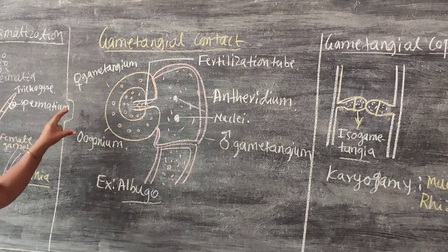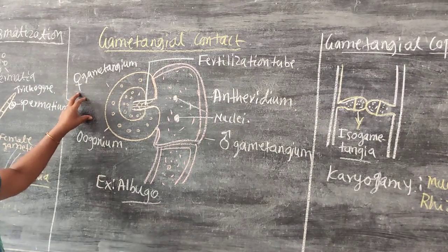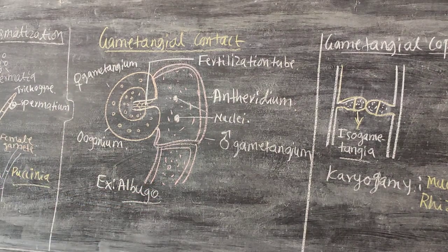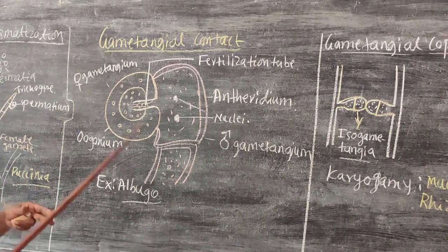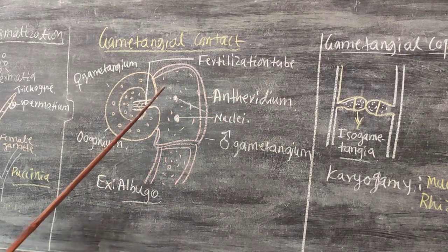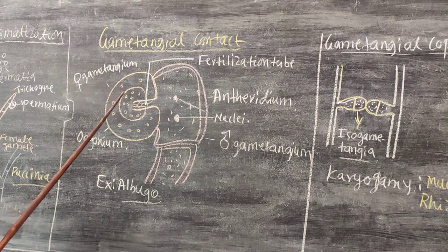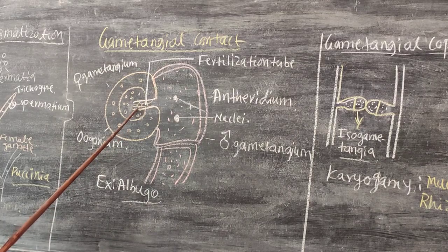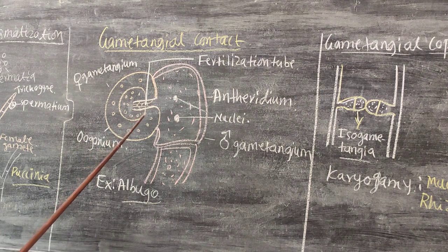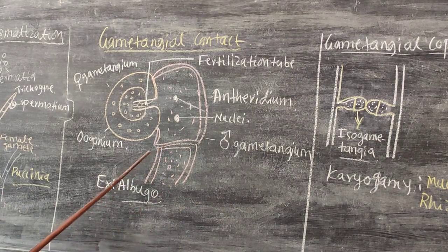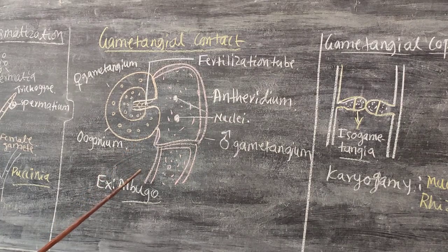They produce the male gametangium and female gametangium, which come in contact. At the point of contact, they produce the fertilization tube. This tube pierces the wall of the female gametangium, and through this fertilization tube, the entry of the male nuclei takes place. Then fusion among the male nuclei and female nuclei occurs, resulting in the formation of a diploid zygote, which develops into a new plant.